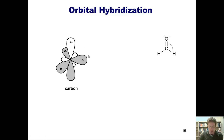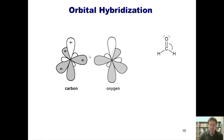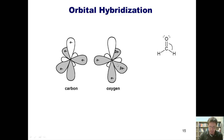Now oxygen, which is also sp² hybridized in this molecule, comes in. Oxygen has six valence electrons which occupies orbitals like this. These two electrons coupled here in one of the sp² hybridized orbitals, as well as these, represent the lone pairs dangling off of the oxygen.